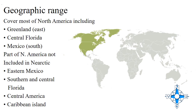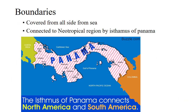The second included area is Central Florida, which is a state of the US. The next is Mexico, a country in the southern portion of North America, bordered to the north by the United States and to the south and west by the Pacific Ocean. Parts of North America not included in the Nearctic region are Eastern Mexico, Southern and Central Florida, Central America, and the Caribbean islands.